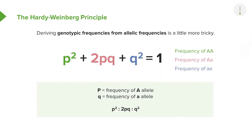You might ask why on earth do I need to know this Hardy-Weinberg principle equation when I'm going to be a doctor, not a population geneticist. Well, the bottom line is you need to know it because it's going to be on your exam. You see the exclamation point at the top there? We know it's going to be on the exam, so we need to understand how to work with it and what it all means.